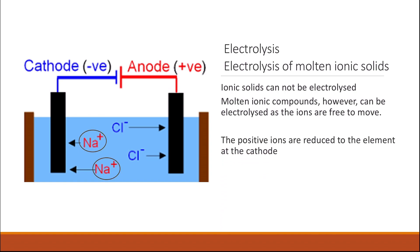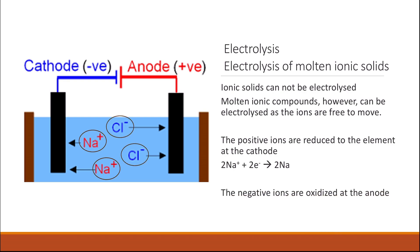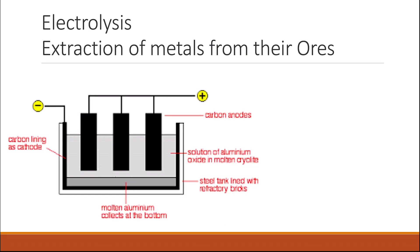In molten sodium chloride, the positive sodium ions move toward the cathode and are reduced to give elemental sodium. The negative chloride ions travel toward the anode (the positive electrode) and are oxidized, losing electrons. A practical example of electrolysis to extract metal from ore is the extraction of aluminium from aluminium oxide. In this electrolysis, we need two electrodes: a carbon anode and a carbon lining of the vessel, which acts as the cathode.